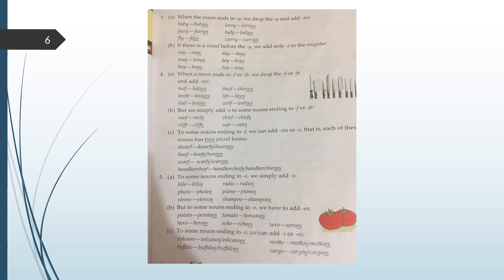To some nouns ending in F, we can add VES or S. That is, each of these nouns have two plural forms. Dwarf, dwarfs and dwarves. Hoof, hoofs and hooves. Scarf, scarfs and scarves. Handkerchief, handkerchiefs and handkerchiefs.